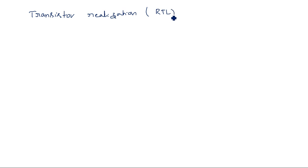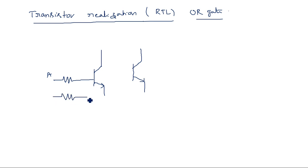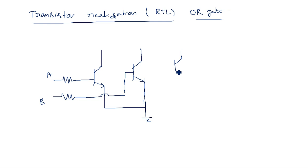Now coming to transistor realization — this is called resistor transistor logic (RTL) for the OR gate. Here, the number of inputs determines how many transistors are needed. Those transistors are connected in parallel, and along with them we should also have one more transistor. Let us consider a two-input OR gate: the two inputs are applied to two transistors, and these two transistors are connected to ground.